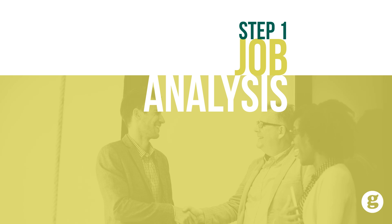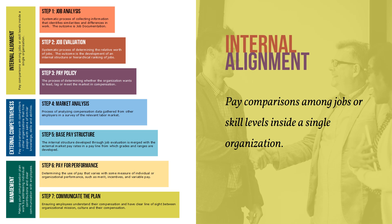Building a compensation plan is a simple seven-step process that will ensure your compensation plan is internally aligned, externally competitive, and well managed. The first functional area of building a compensation plan is internal alignment. Internal alignment refers to pay comparisons among jobs or skill levels inside a single organization, ensuring robust job analysis and job evaluation are completed and appropriate pay policy decisions are made by the organization.